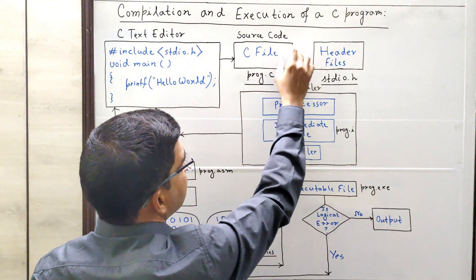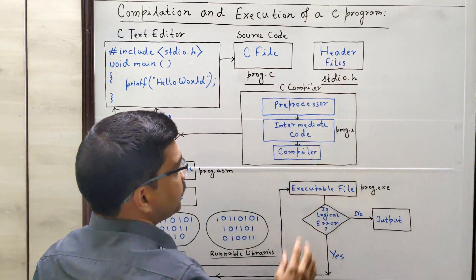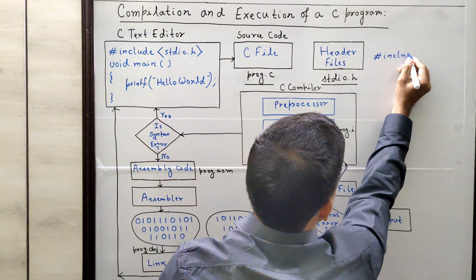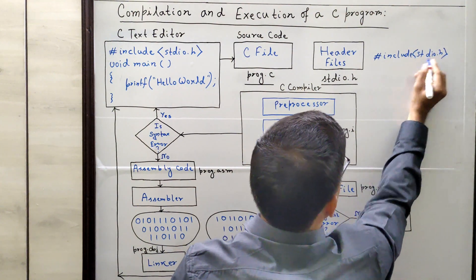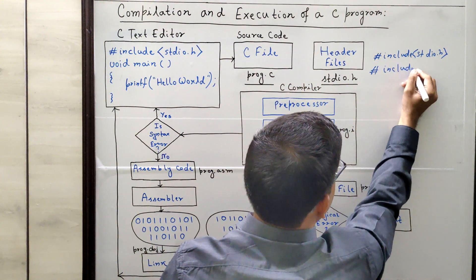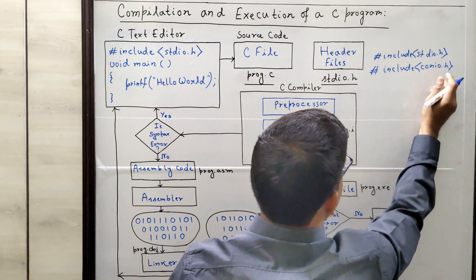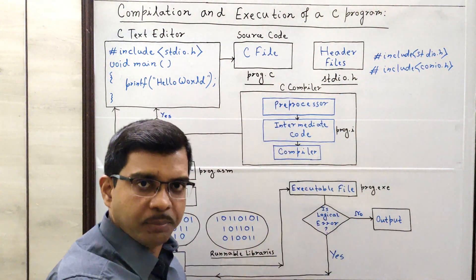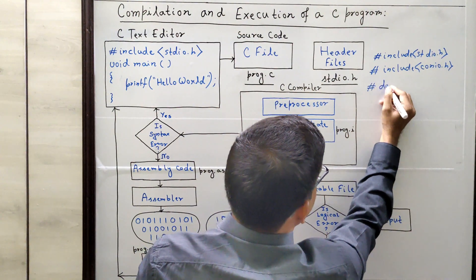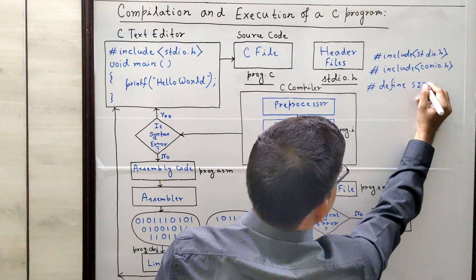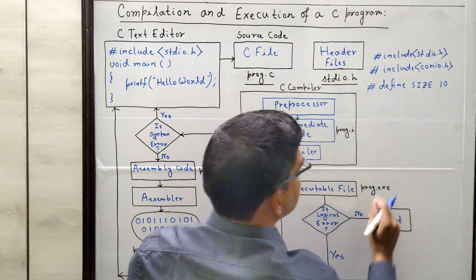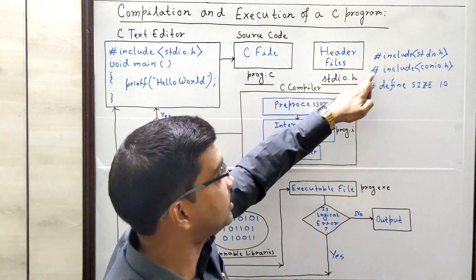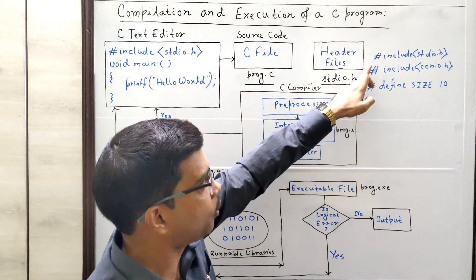After saving this C code in the source file, the header files that we have included — for example, #include stdio.h and another header file, #include conio.h — have been included. So this header file along with the source file now has to be compiled. Now suppose you have also defined a macro like #define SIZE 10. So whatever lines we have mentioned using the hash symbol are called preprocessor directives. Preprocessor directives will always start with a hash symbol.